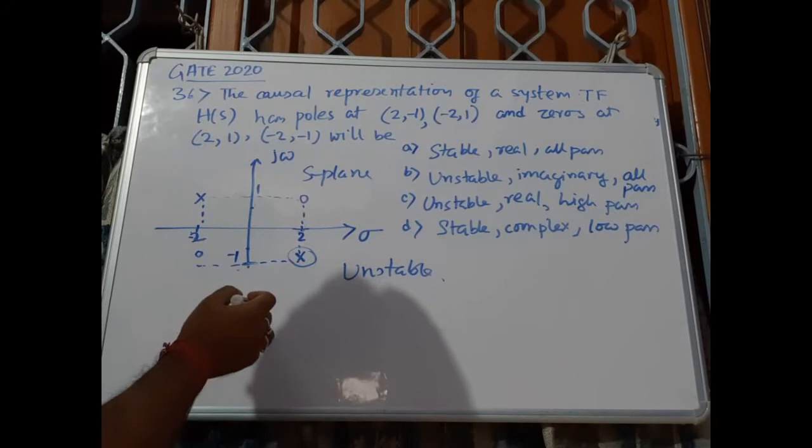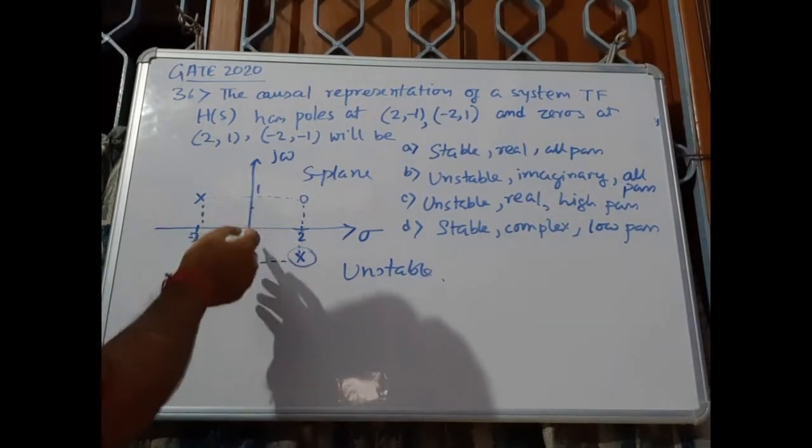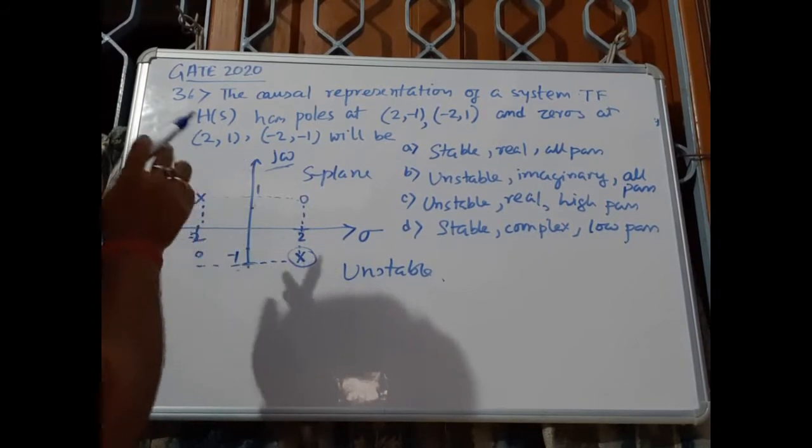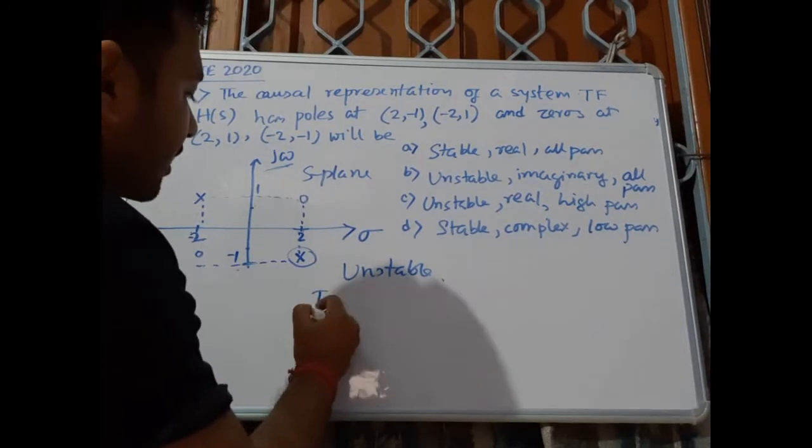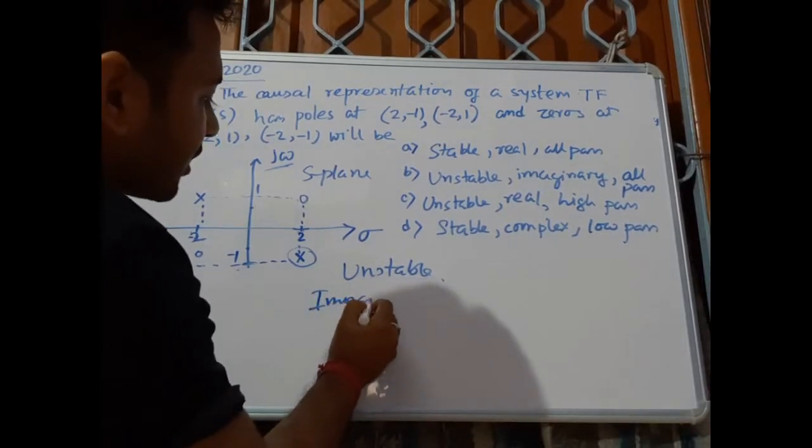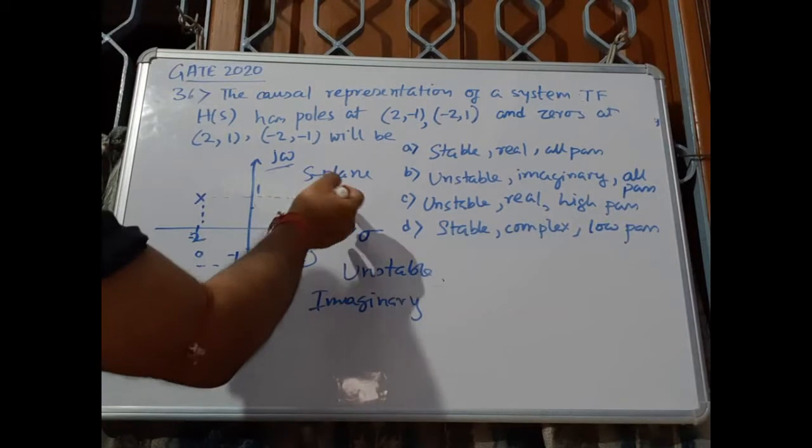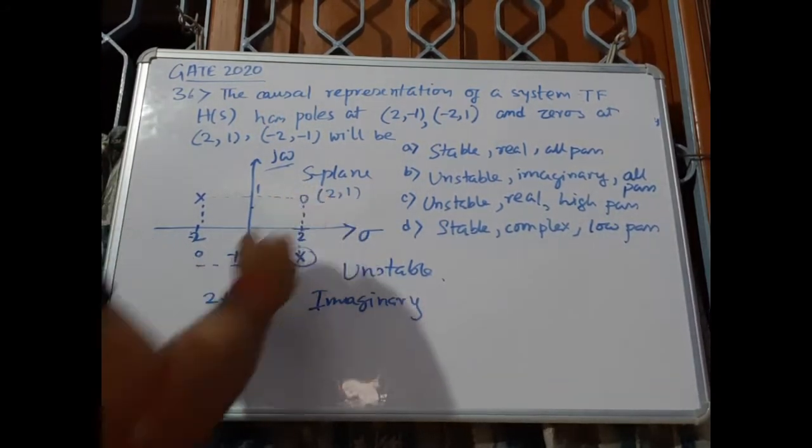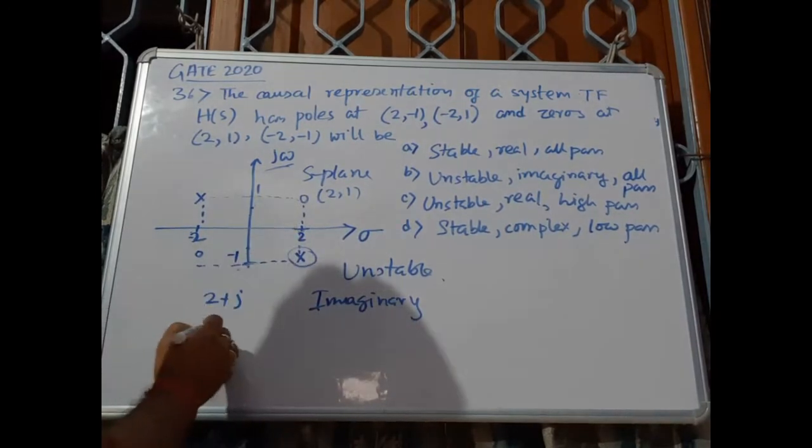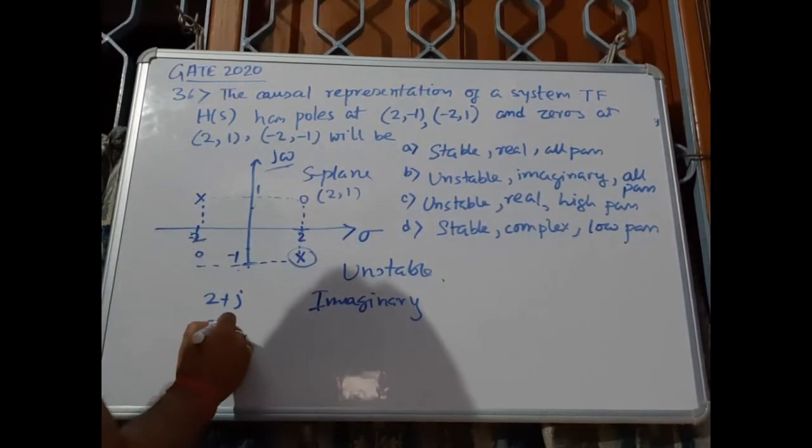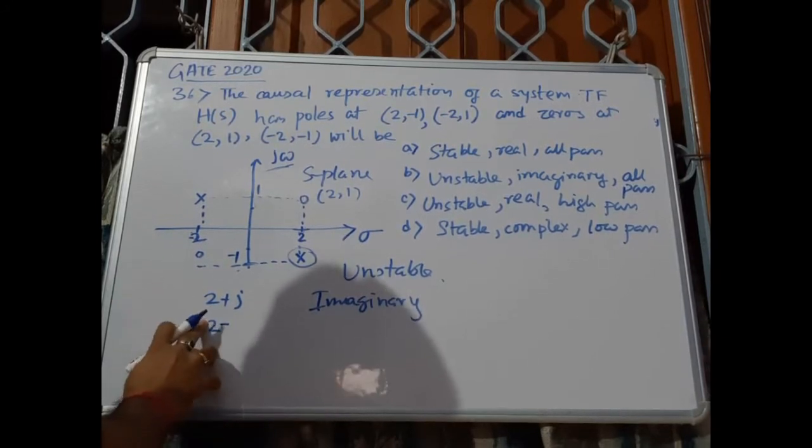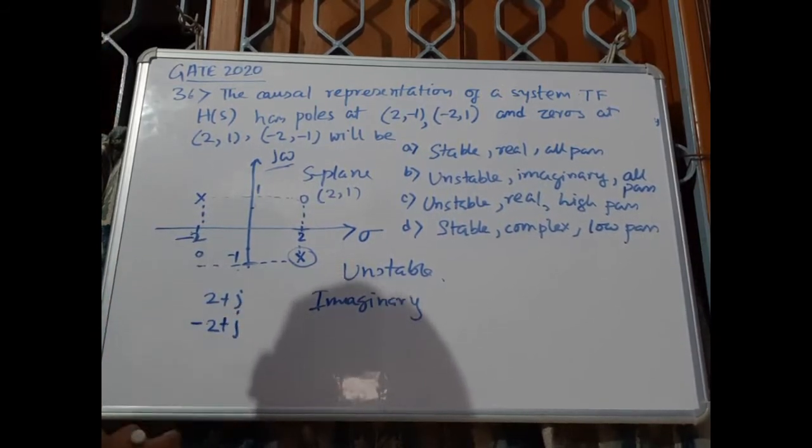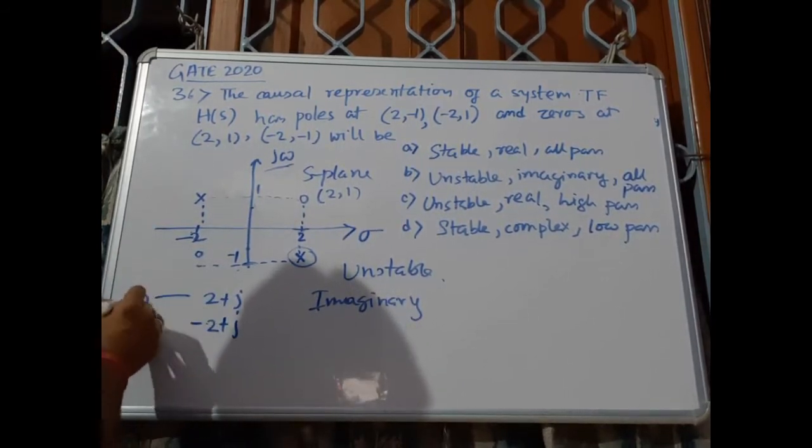For real and complex, we can see that we have components of the j Omega axis for the poles and zeros, so it must be imaginary. What is 2+j? We have a zero here and we have a pole here. -2+j means we have a zero here and we have a pole.